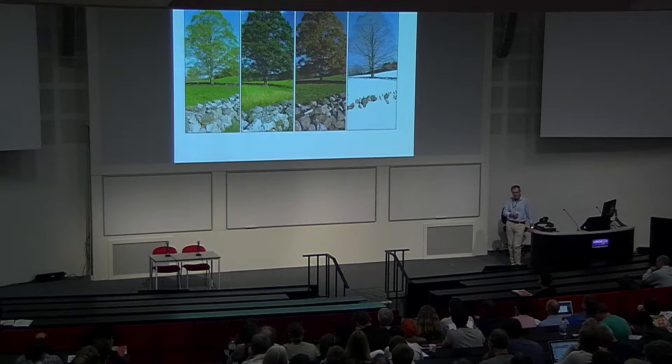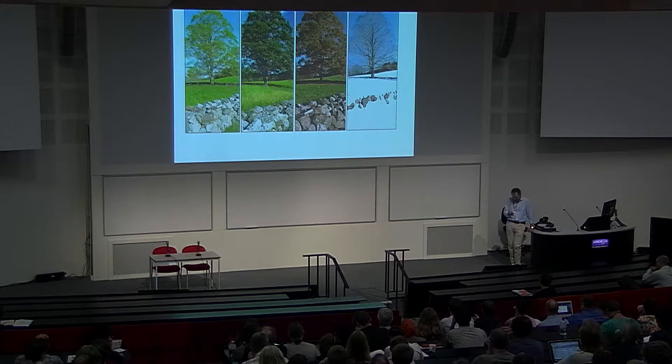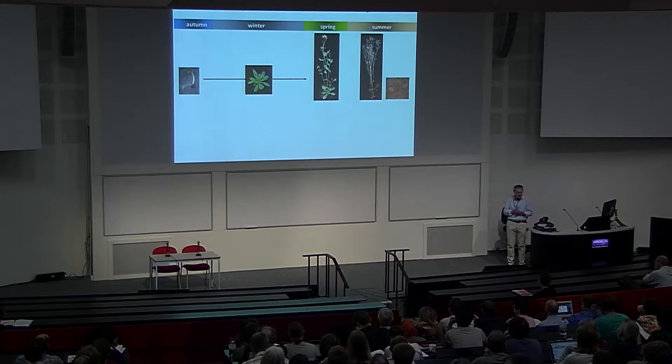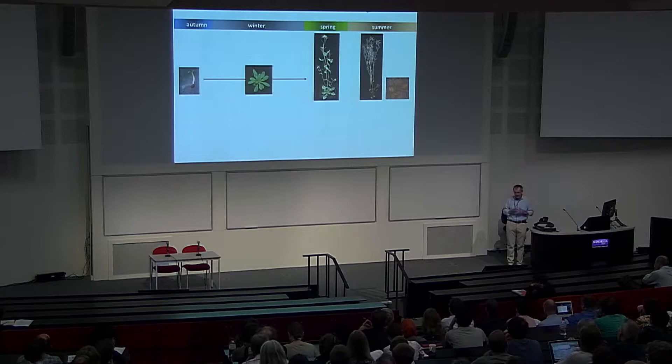Specifically, how plants detect seasonal change and use it to control developmental programs. This is an iconic example — a deciduous tree where bud break and bud dormancy are all controlled by seasonal responses, so that the life cycle of the plant is synchronized to the changing seasons. We've been using a much more experimentally tractable system, which is the model plant Arabidopsis thaliana, but it still shows very clear and robust responses to seasonal change.